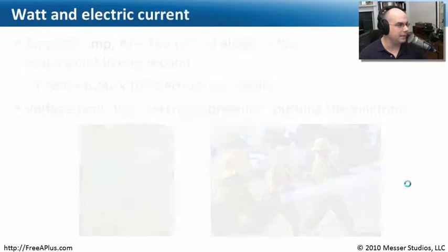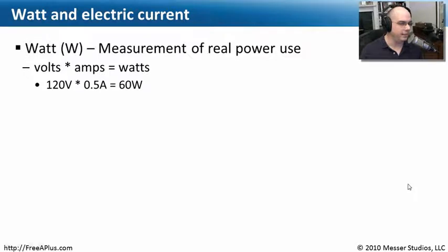Now you start combining these things together, and you're going to have this idea of an electrical current. A watt is a measurement of how much power we are using. So you'll see if you take the number of volts and multiply it by the number of amps, you have a total wattage. So 120 volt power that we have generally here in the United States, multiplied by half an amp, 0.5 amps, is equal to 60 watts of power.